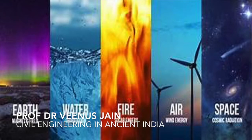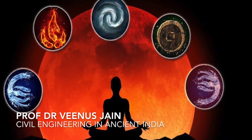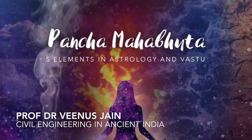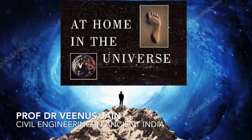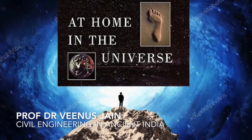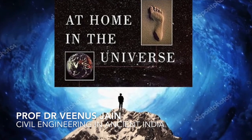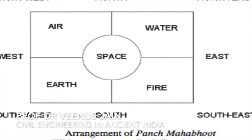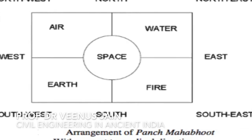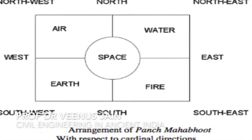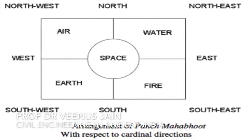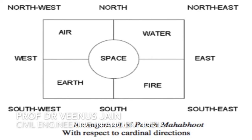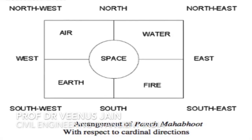The entire universe, including our body, is composed of five basic elements — air, earth, fire, space and water — called Panch Mahabhut. The main principle of Vastu is to maintain the balance between a dwelling structure and the elements of the universe for happiness and comfort. Vastu is the science of direction that combines all five elements of nature and balances them with man and material. This is how the arrangement of Panch Mahabhut with respect to cardinal directions has been done on a map.